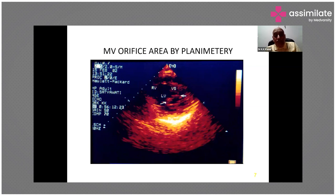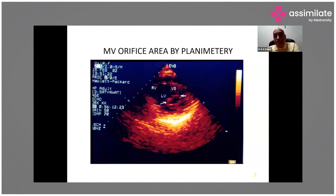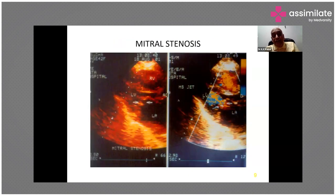On the parasternal short-axis view at the level of the mitral orifice, you can see the anterior and posterior mitral leaflets with the posteromedial and anterolateral commissures, and the orifice in between. The orifice is planimetered at its maximum size, usually in mid-diastole. This example shows a tight mitral stenosis with a mitral valve area of 0.7 cm².